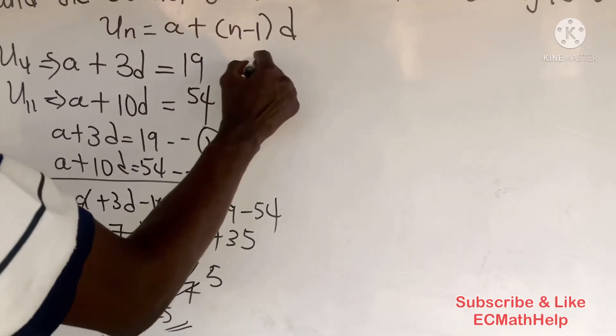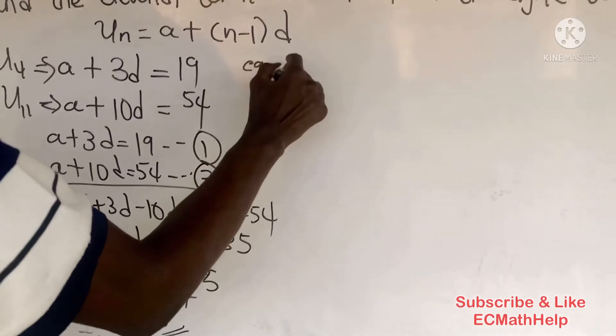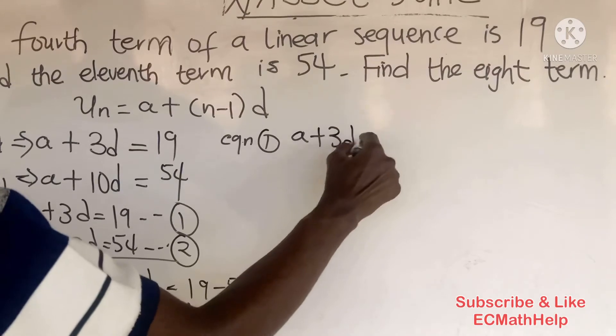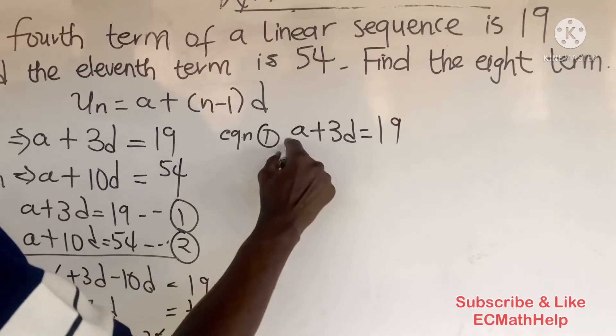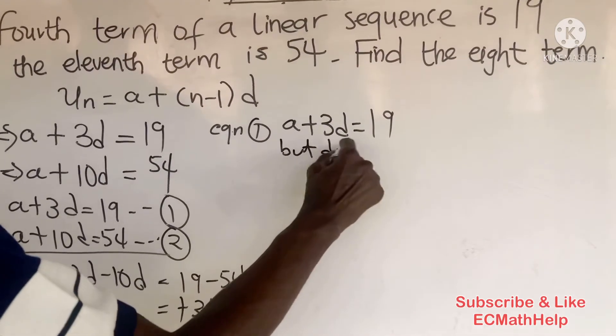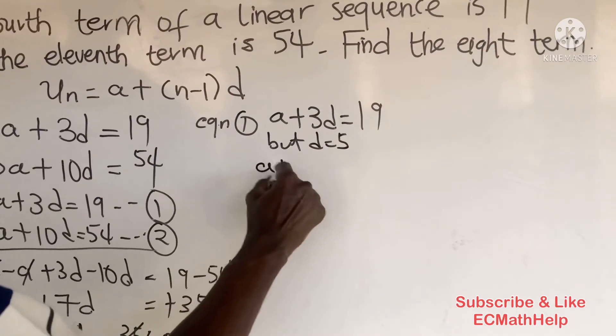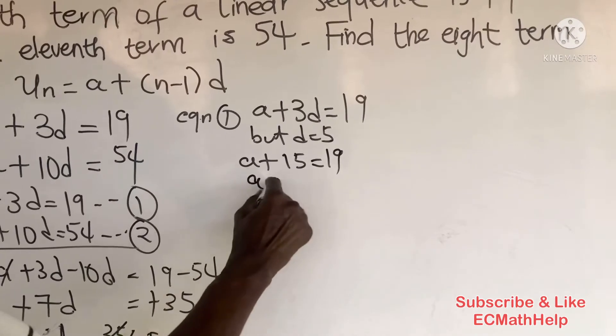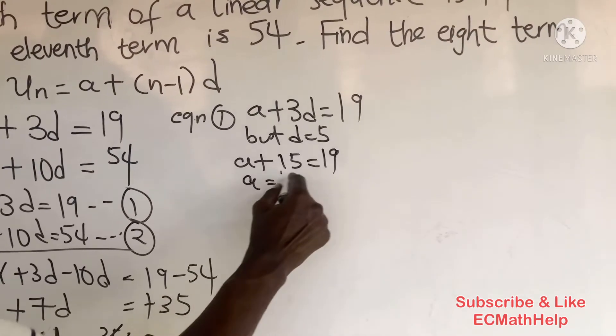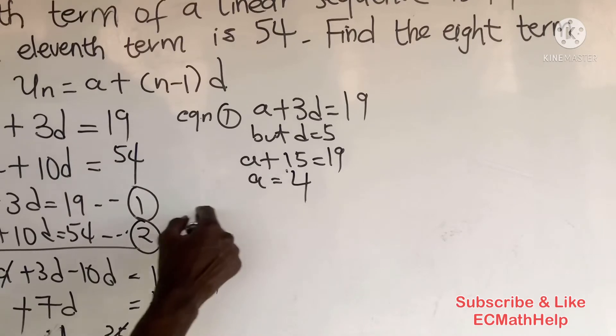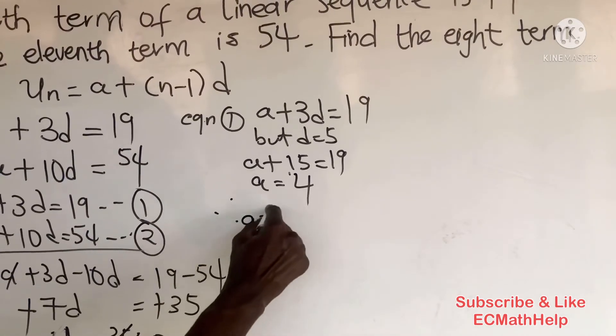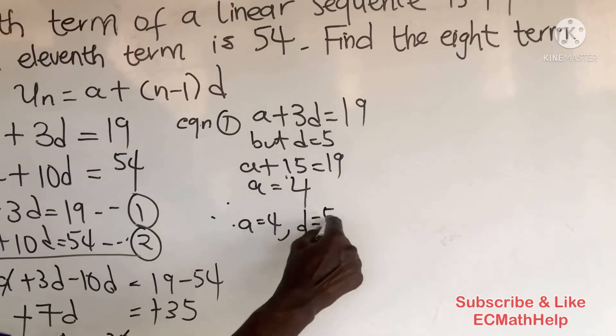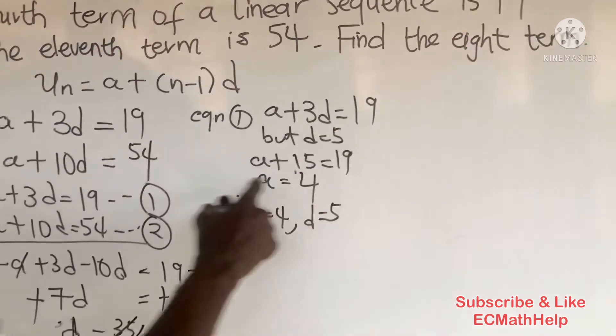the equations. Let's use equation 1: a + 3d = 19. Since d is 5, we get a + 3 times 5 equals 19, so a + 15 = 19. Therefore a = 4. Now we have a = 4 and d = 5. The question asks to find the 8th term.